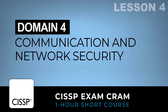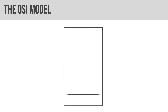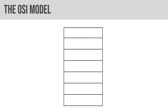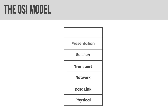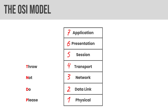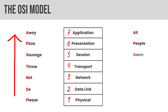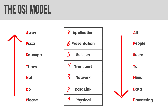Let's get into domain four — communication and network security. You will be expected to be very familiar with the OSI model. There are seven layers, going from physical at layer one up to the application layer at seven. I have two memory devices — two acronyms to easily remember these layers: going up, 'Please Do Not Throw Sausage Pizza Away,' or going the other direction, 'All People Seem To Need Data Processing.' I actually like the second one better because it's relevant to the topic, which tends to make a memory device better.